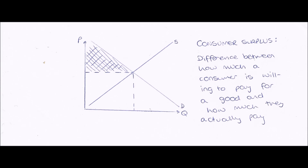So say for example I was willing to buy a new phone for 450 pounds, but I managed to buy that phone for 350 pounds. In that case, my consumer surplus would be 100 pounds, because I was willing to pay 450 pounds for it but I ended up only paying 350 pounds for it.